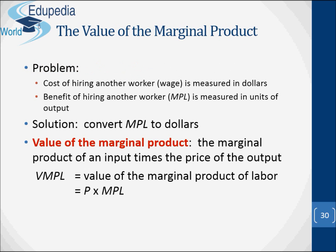The marginal product of labor (MPL) is the increase in the amount of output from an additional unit of labor, where delta Q equals the change in output and delta L measures the change in labor. Since the cost of hiring a worker is measured in dollars but MPL is measured in units of output, we convert MPL to dollars using the value of the marginal product: VMPL = P × MPL, where P is the price of the output.